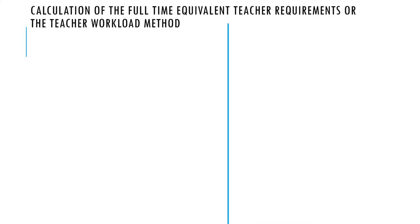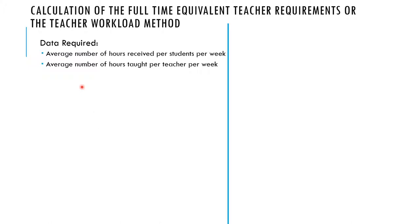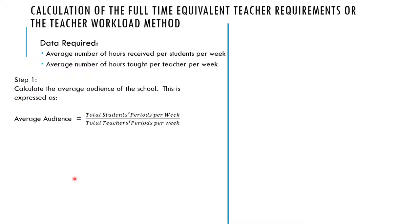Now let us calculate using the full-time equivalent teacher requirement, or the teacher workload method. This method uses the workload the teacher carries to determine the total number of teachers required, instead of working with total student enrollment. The data required are: the average number of hours received per student per week, and the average number of hours per teacher per week. Step one is to calculate the average audience of the school, expressed as total student periods per week over total teacher periods per week.